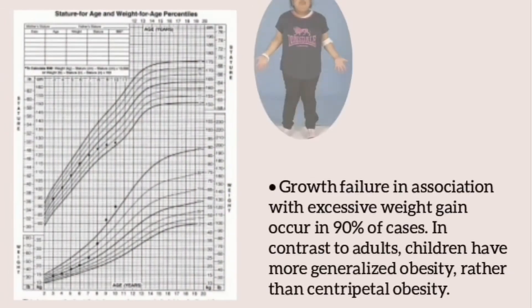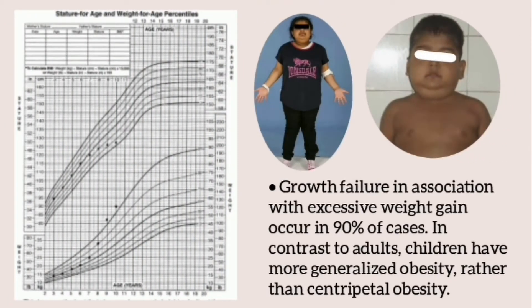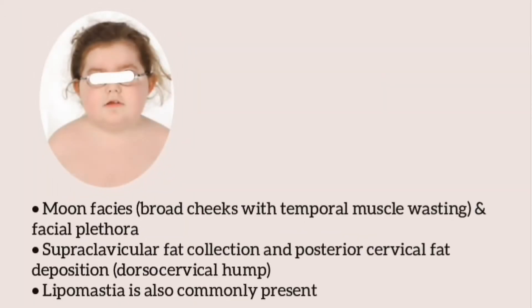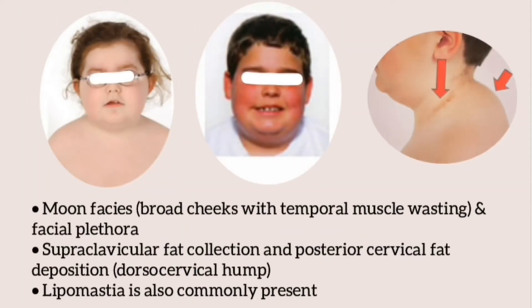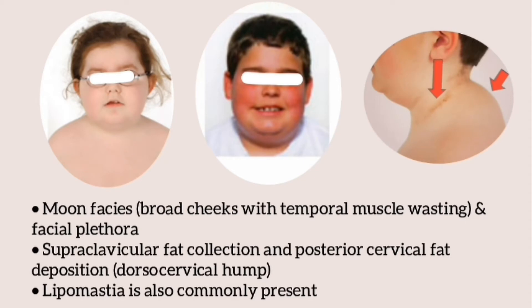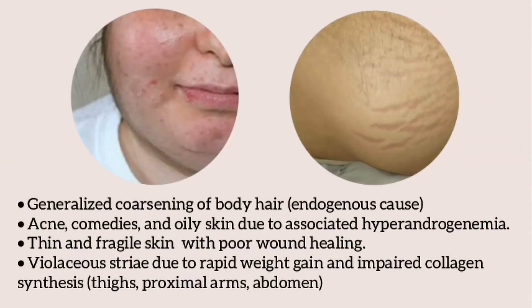Growth failure in association with excessive weight gain occurs in 90% of cases. In contrast to adults, children have more generalized obesity rather than centripetal obesity. These children have moon facies with broad cheeks and temporal muscle wasting, and there is facial plethora. There is supraclavicular fat collection and posterior cervical fat deposition known as the dorsal cervical hump.